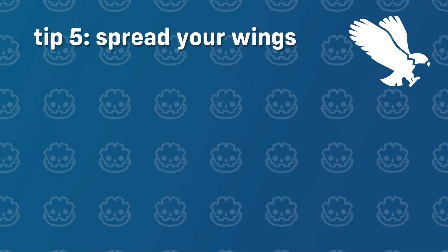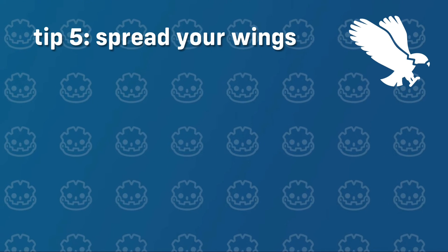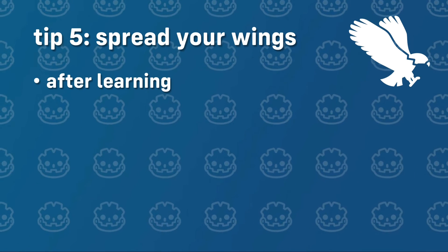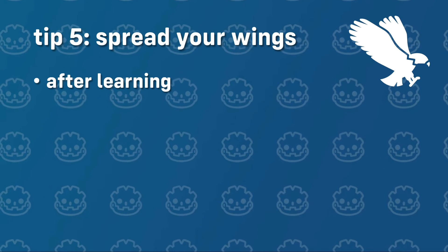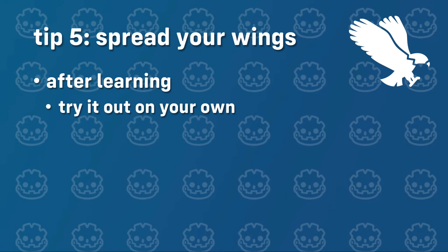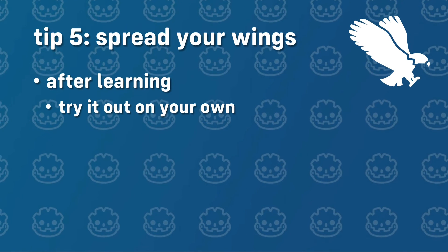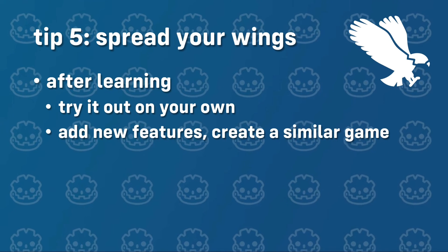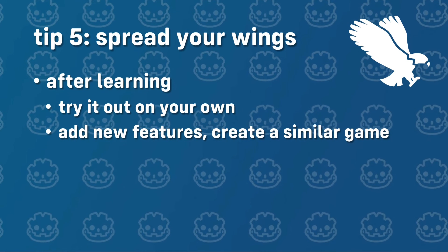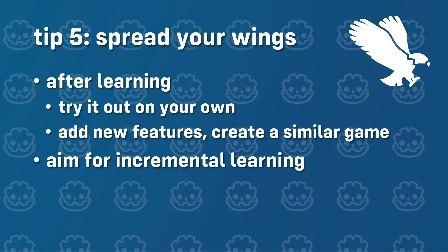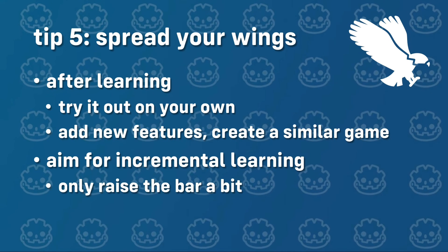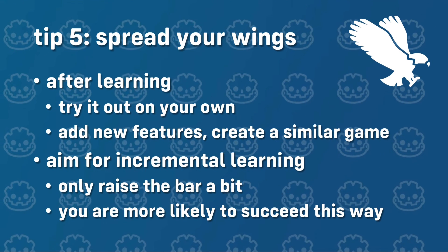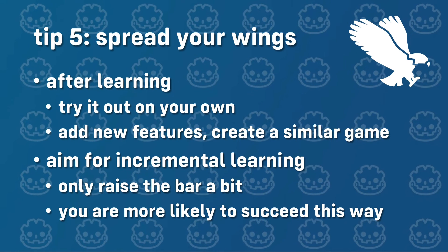Tip 5 is about applying your knowledge elsewhere and trying to experiment on your own. So if you learned a lot of stuff from a Flappy Bird tutorial, try to apply that knowledge to something else before you move on to the next one. It's important to experiment on your own and try to create small games or projects with similar scope — maybe add a couple of new features, or do something like Doodle Jump after Flappy Bird. Just don't try to create an FPS shooter after Flappy Bird — one step at a time. This is called incremental learning. You are much more likely to succeed if you take on projects at the ceiling of your current skill level, cementing new knowledge and setting yourself up for success.